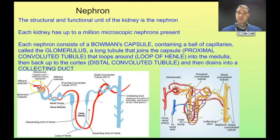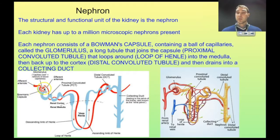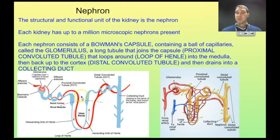Blood coming into the nephron travels from an arteriole into a bed of capillaries called a glomerulus. Capillaries are leaky, so under high pressure, some of the fluid is pushed out of those capillaries and is captured by a structure called Bowman's capsule, which picks up the substances pushed out of the blood. The capillary continues around and follows the rest of the nephron — this is where reabsorption happens.